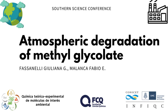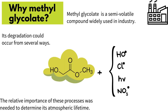The present study is about atmospheric degradation of methylglycolate (MG). Methylglycolate is a semi-volatile compound widely used in industry, so it is possible that it could be emitted to the atmosphere. As with similar organic compounds, its degradation could occur in several ways.